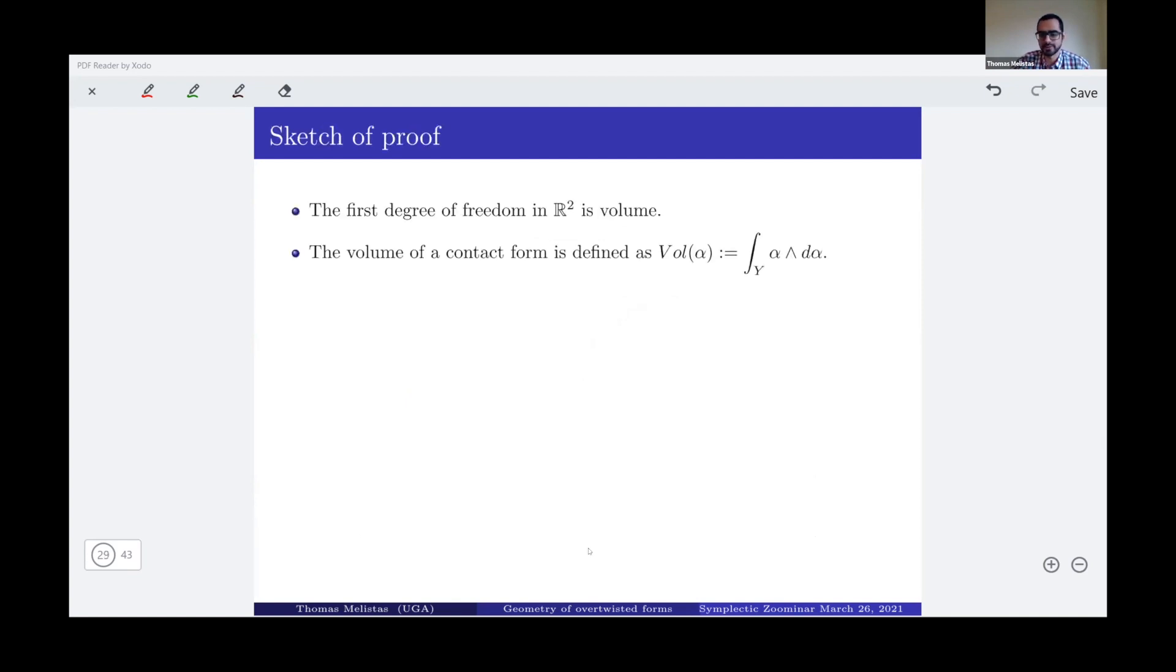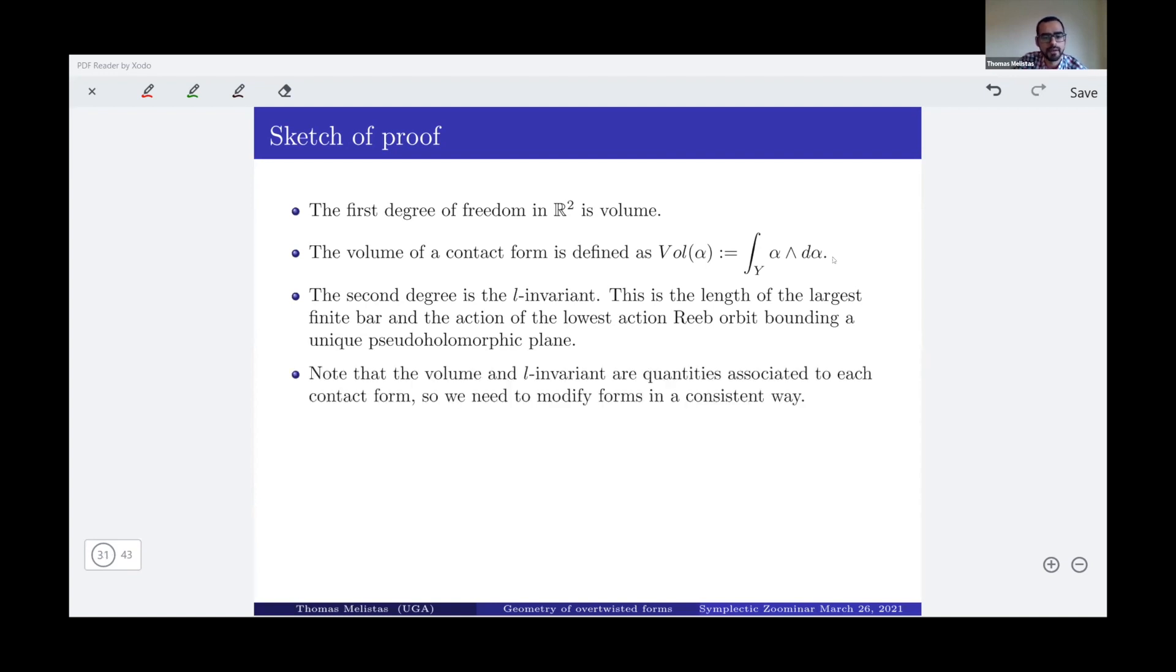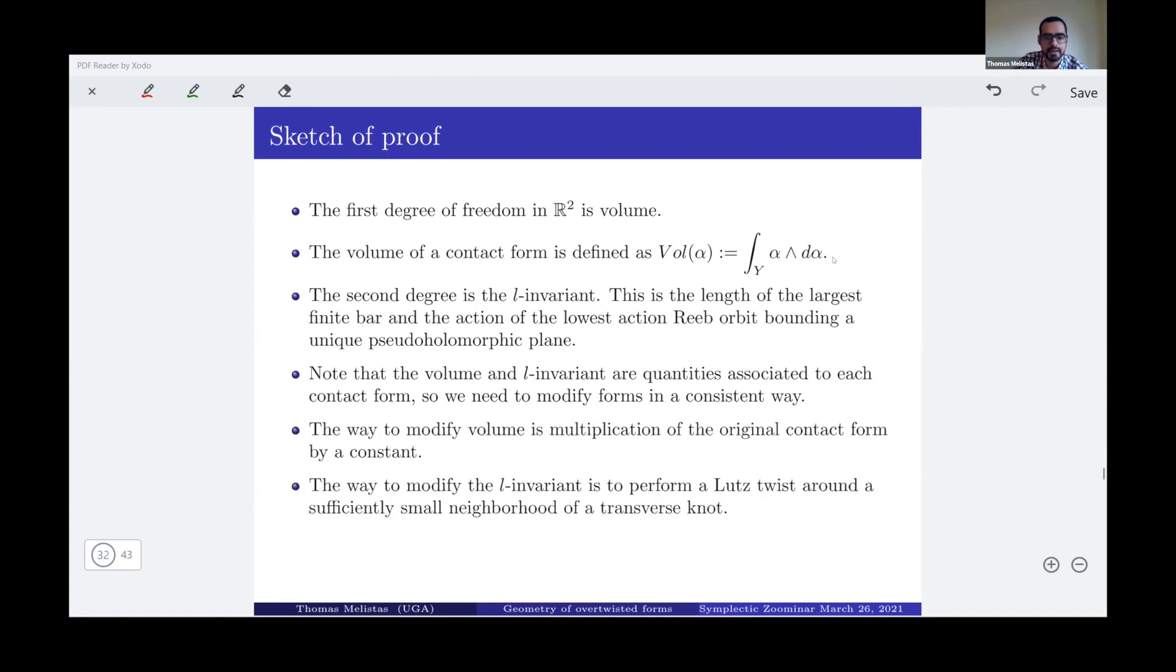Now, as we are going towards the end of the proof, at the end of the talk, the first degree of freedom in R^2, in this part of R^2, should be volume, and the volume of the contact form is defined by this formula. The second degree of freedom will be the L invariant. So the horizontal degree of freedom is volume, the vertical degree of freedom is the L invariant of the largest finite bar. And geometrically speaking, the action of the lowest action orbit bounding a unique pseudo-holomorphic plane in the symplectization. That's how you can understand this. Now, the volume and the L invariant are quantities associated to each contact form, so we have to modify. So you can imagine that if my volume is one, and I want to have volume k, then I can multiply my form by square root of k.